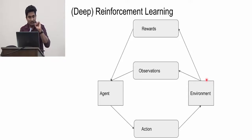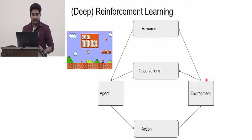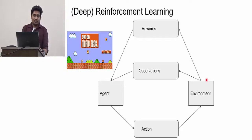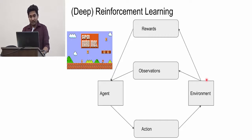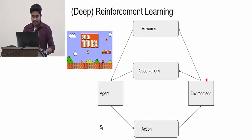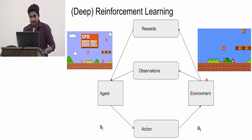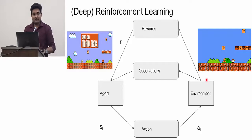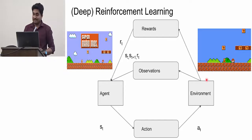Let me explain with an example. I think everyone here has played the Mario game, Super Mario. In the Mario game, the environment is Super Mario Bros. Visualize that Mario is playing by itself. Mario will take an action — let's say it will go right. So this is its current state. It will go right. The next state will be the next frame, and from that Mario will get some reward.